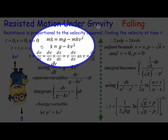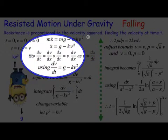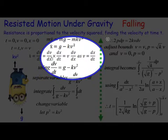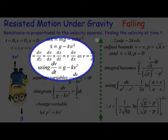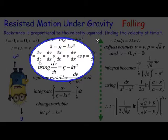we just look at the signs. x double dot equals g minus kV squared, obviously divided by m. Now because we're going to write the acceleration x double dot in different ways, I've just written here and we're going to use the dv/dt and v dv/dx shortly.